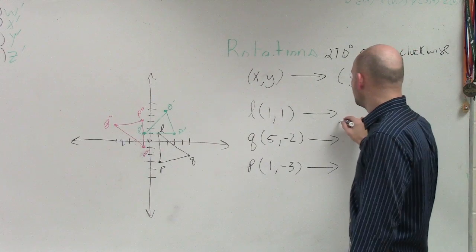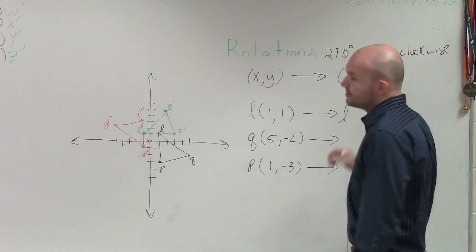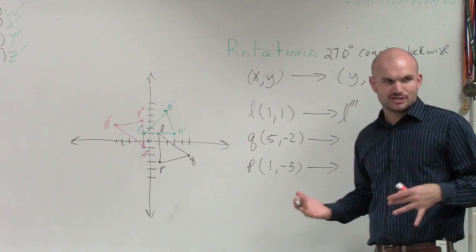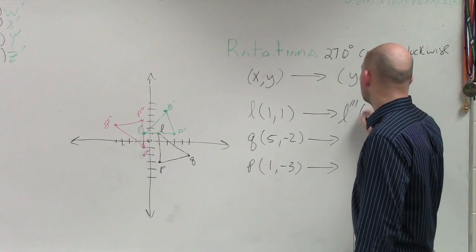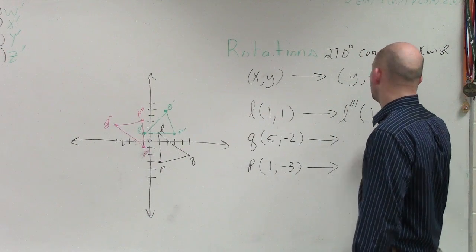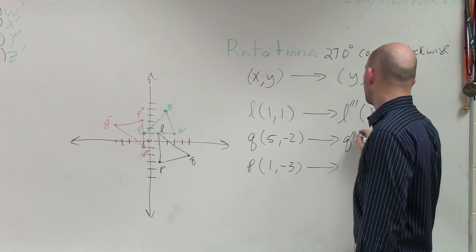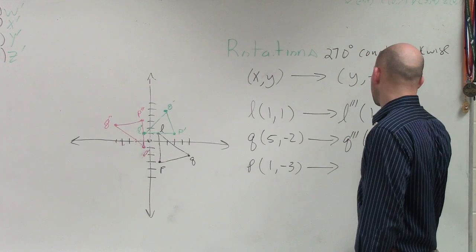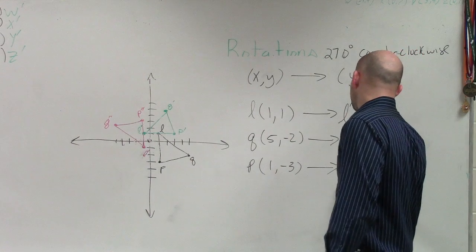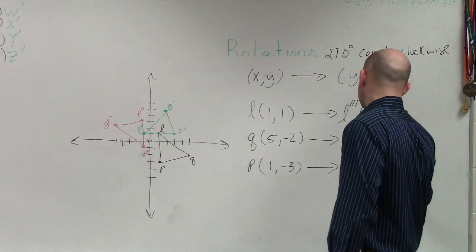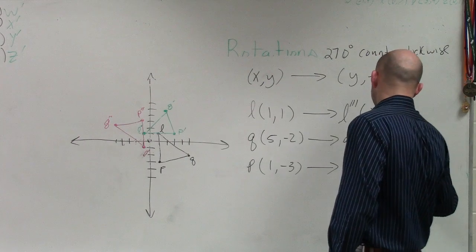So therefore, my new points, which I'm going to call L triple prime, because I'm just doing this transformation three times, is now going to be 1, negative 1. Q triple prime is now going to be negative 2, negative 5. And P triple prime is now going to be negative 3, comma, negative 1. All right?